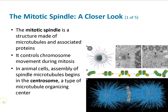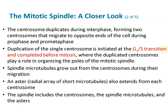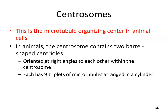Let's look a little bit deeper into the mechanisms. The mitotic spindle is a structure made of microtubules and associated proteins. Here's a centrosome from a research article — you can see the asters fluorescently dyed. The centrosome is a microtubule organizing center. It duplicates between the G1 and S transition and must be complete before mitosis because it organizes the mitotic spindle. Spindle microtubules grow out of the centrosome during migration, and asters also extend from each centrosome. The spindle includes the centrosome, spindle microtubules, and asters. In animal cells, the centrosome contains two barrel-shaped centrioles.